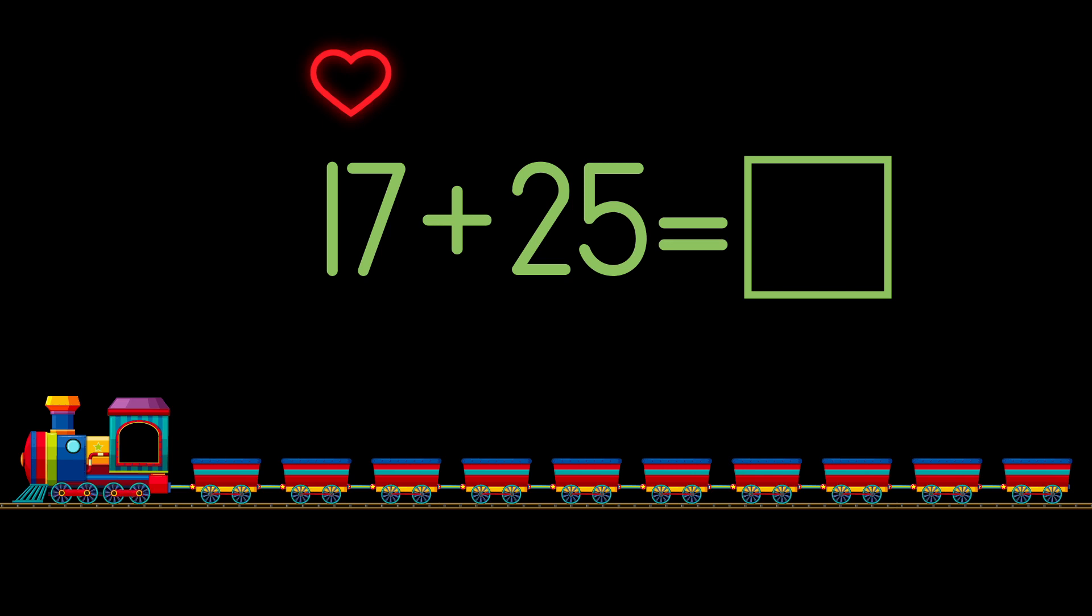Rule number 2: make a lightning bolt above the second number. The lightning bolt breaks 25 into tens and units. To make 25 we need a 20 and a 5. Now we make our arrow because we're going to start thinking.